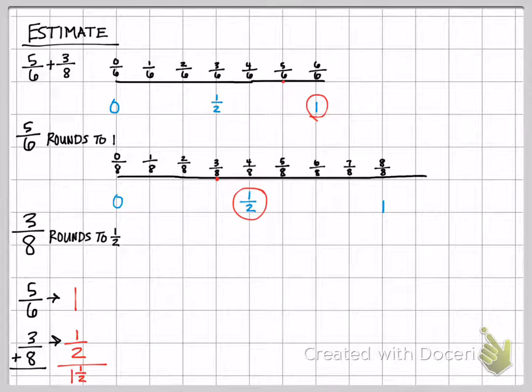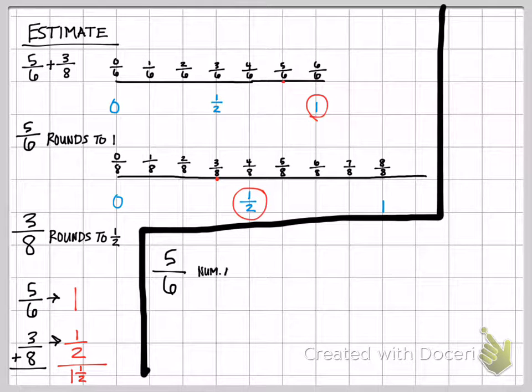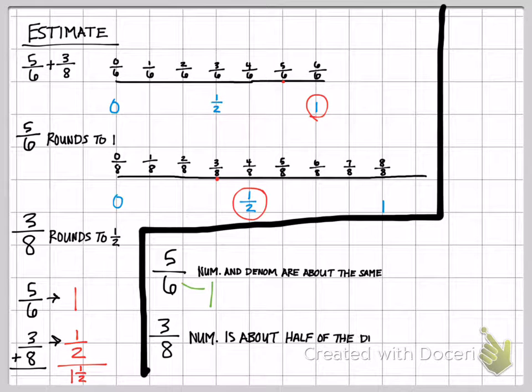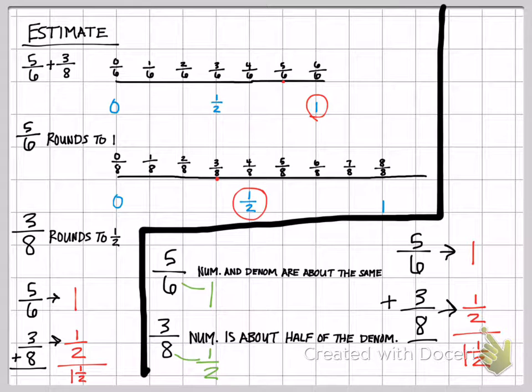Now I'm going to draw a line and box off this strategy so I can show you the other one. So 5/6, and I'm writing it right now, the numerator and denominator are about the same. So that equals 1. For 3/8, the numerator is about half of the denominator like in the other example. So that rounds to 1 half. I add them together and I get 1 and 1 half. Now this is a mixed number which we're going to talk about here in a second.